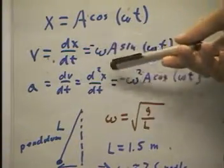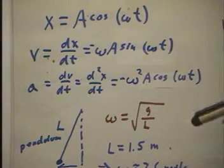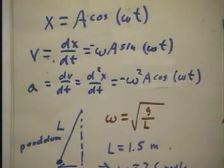Acceleration is the derivative of the velocity, which is the second derivative of the position. Negative omega squared a cosine omega t. Again, calculus students will understand this. Others don't need to. You just have to know the result.